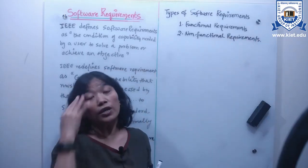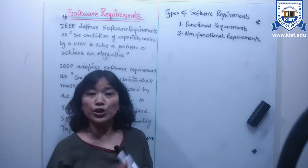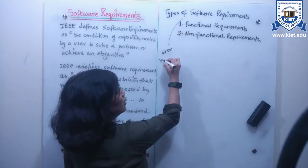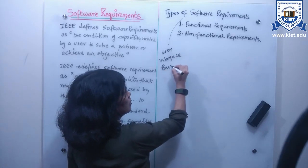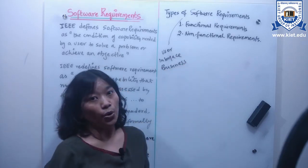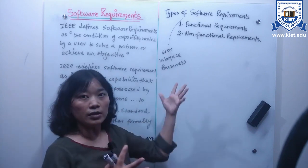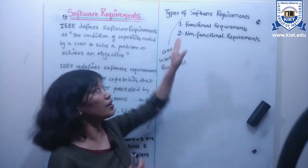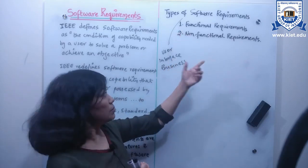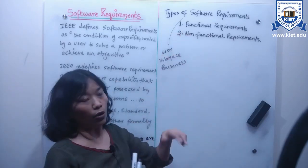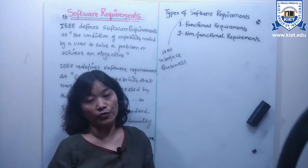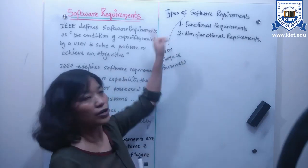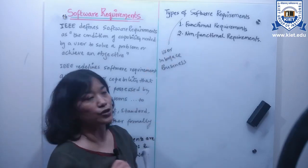If I talk about the types of requirements, there are two main types: functional and non-functional. But other than that, we also have user requirements, interface requirements, business requirements, and so on. These can be further categorized into functional and non-functional — meaning user requirements can be functional or non-functional, and business requirements can be functional or non-functional. In today's class, my focus will be only on functional and non-functional requirements, and I'll start with functional requirements.